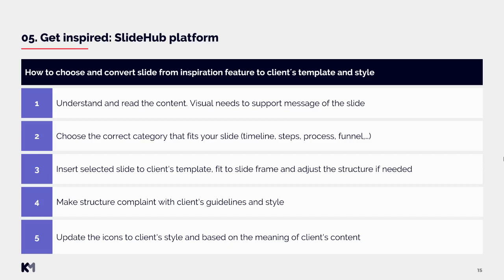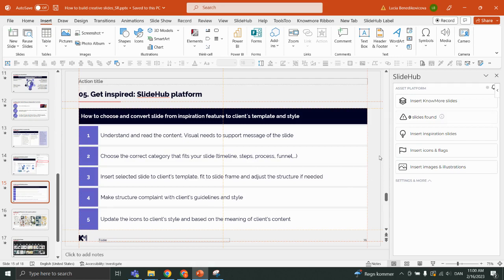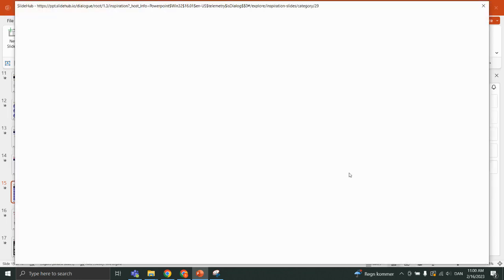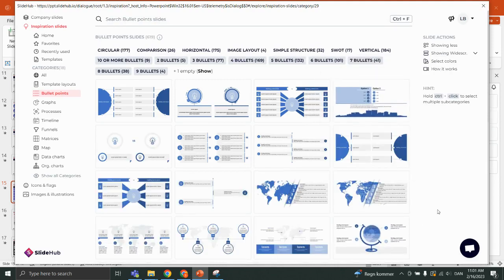You will need to properly recheck the content and, based on its meaning, select icons that support the text. Now I will show you a practical example of how I would choose slides from the SlideHub inspiration feature and convert them to a specific template. First I click on 'Insert Inspiration Slides.' I don't have any input content but I'll pretend my input has only two bullet points, so I click that category and choose a slide that fits my needs, then click 'Insert and use active template.'